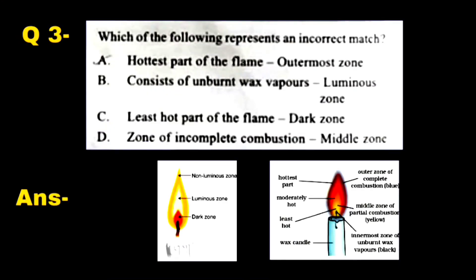Question 3: Which of the following represents an incorrect match? Option A: hottest part of the flame — outermost zone. Option B: consists of unburnt wax vapors — luminous zone. Option C: least hot part of the flame — dark zone. Option D: zone of incomplete combustion — middle zone. We need to find the incorrect match.